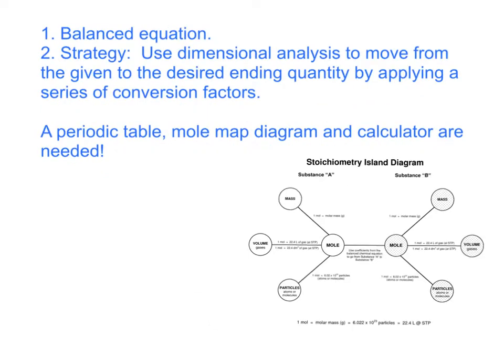As with all stoichiometry problems in chemistry, the beginning is a balanced chemical equation. And then you're going to have a strategy. You're going to look at the given, what you're giving as your starting value, and figure out how to use your dimensional analysis, your fence post method, to move from the given to the desired ending quantity. And it always involves applying a series of conversion factors, multiplying by a series of fractions equal to one.